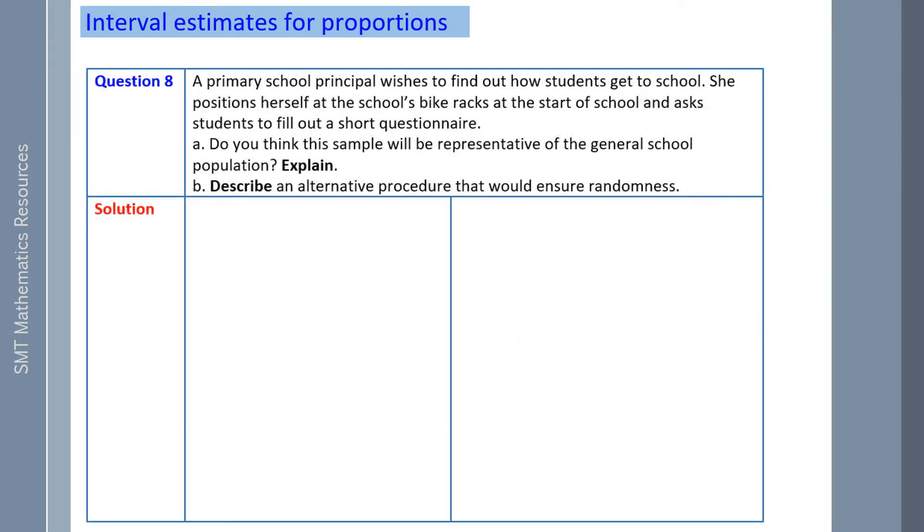Primary school principal wishes to find out how students get to school. She positions herself at the school's bike racks at the start of school and asks the students to fill out a short questionnaire. Do you think the sample will be representative of the general school population? Explain.